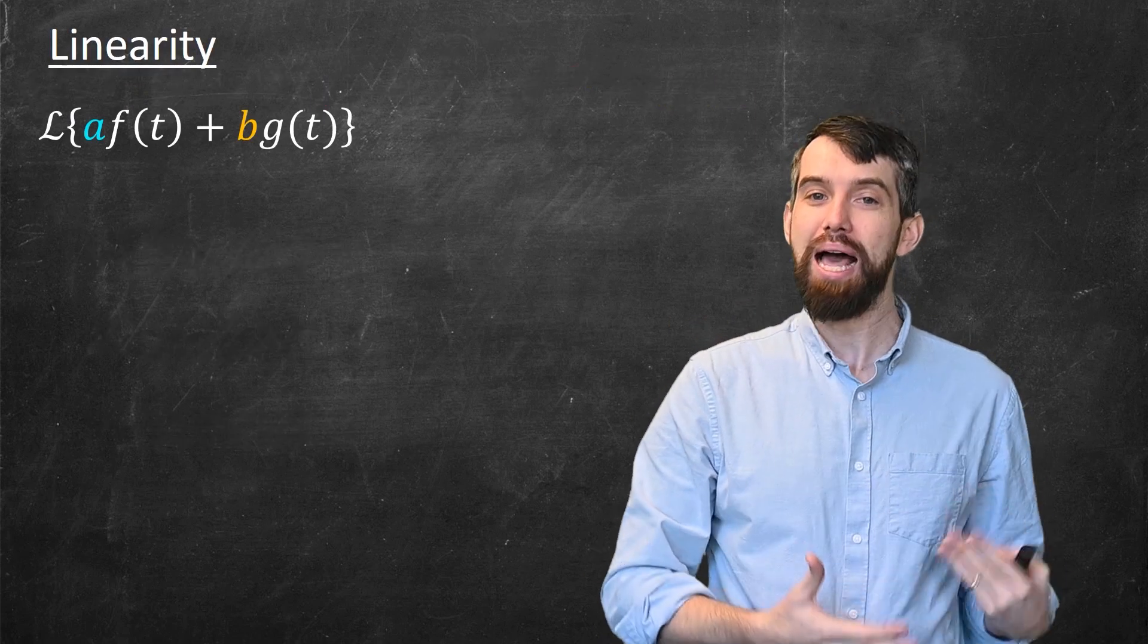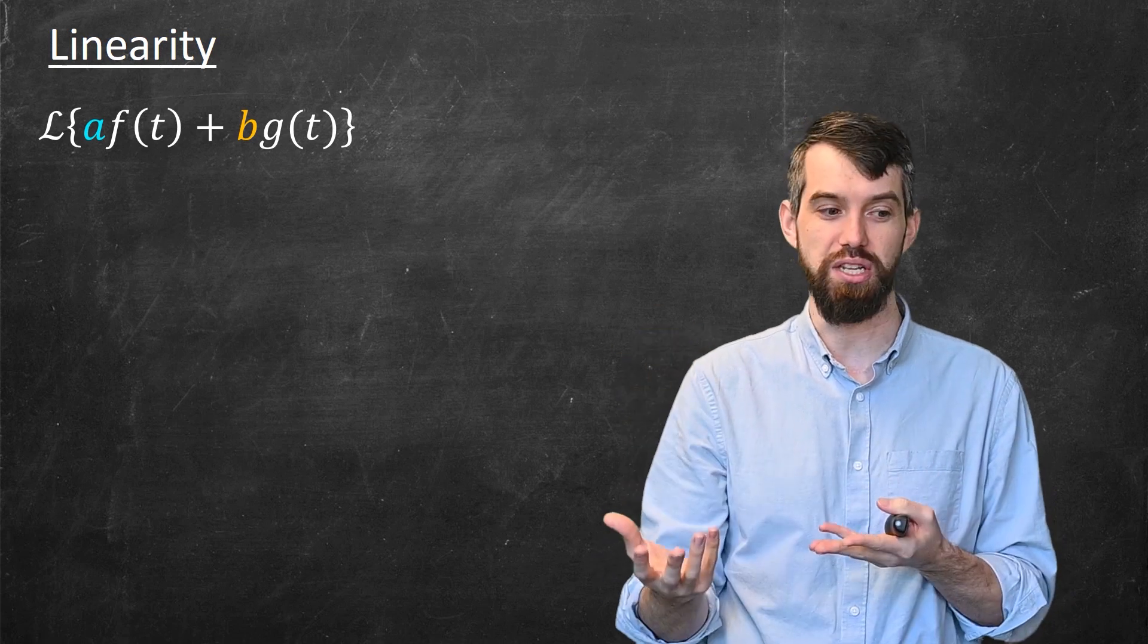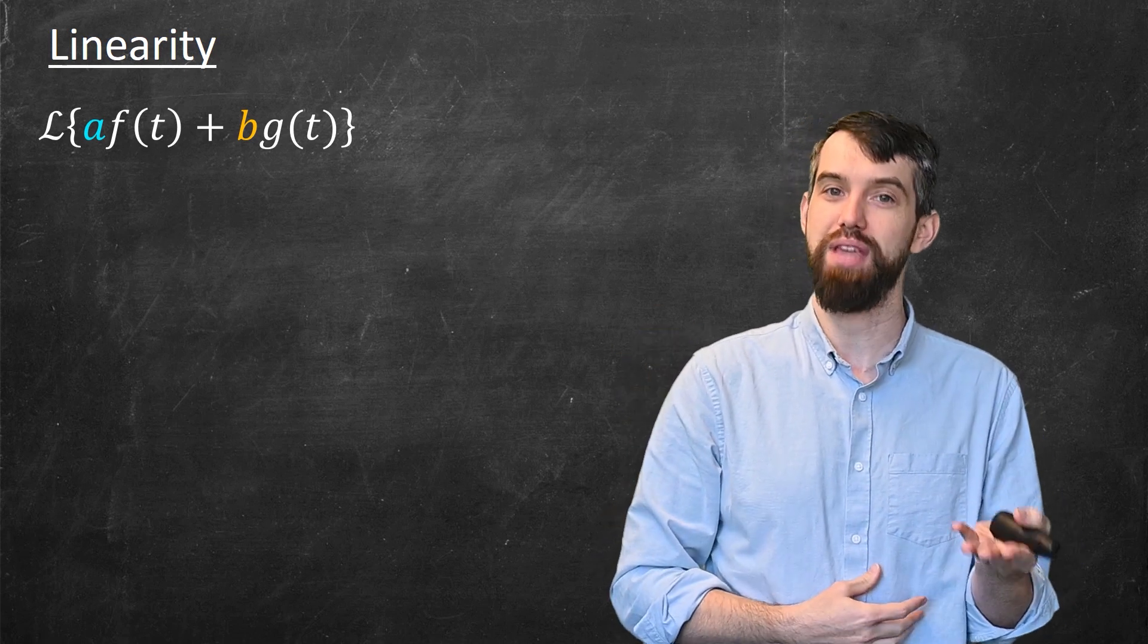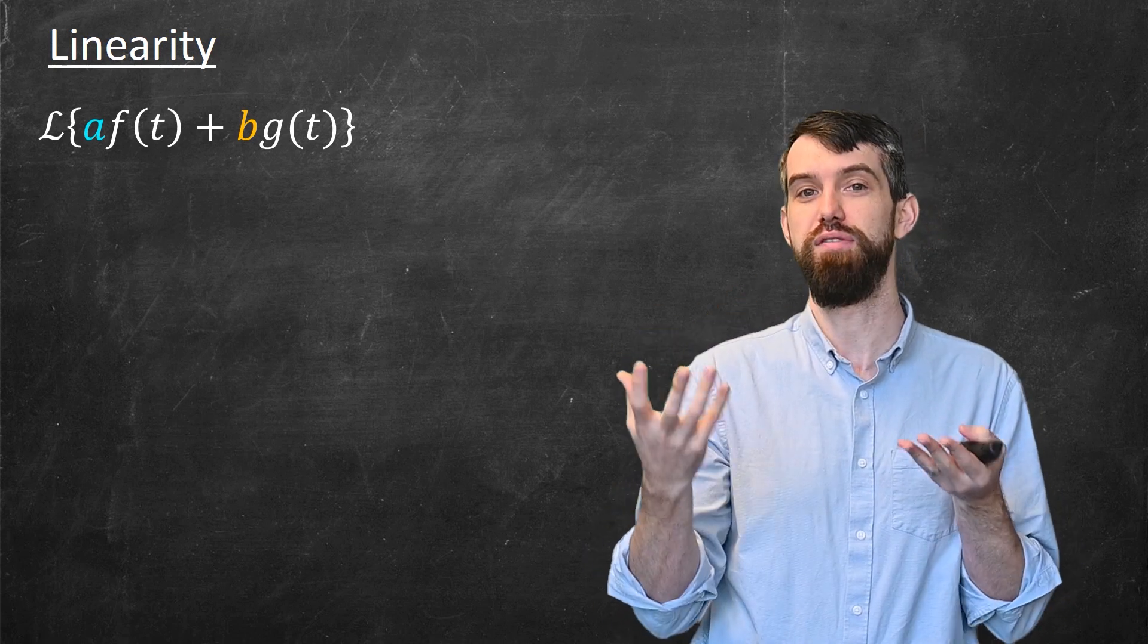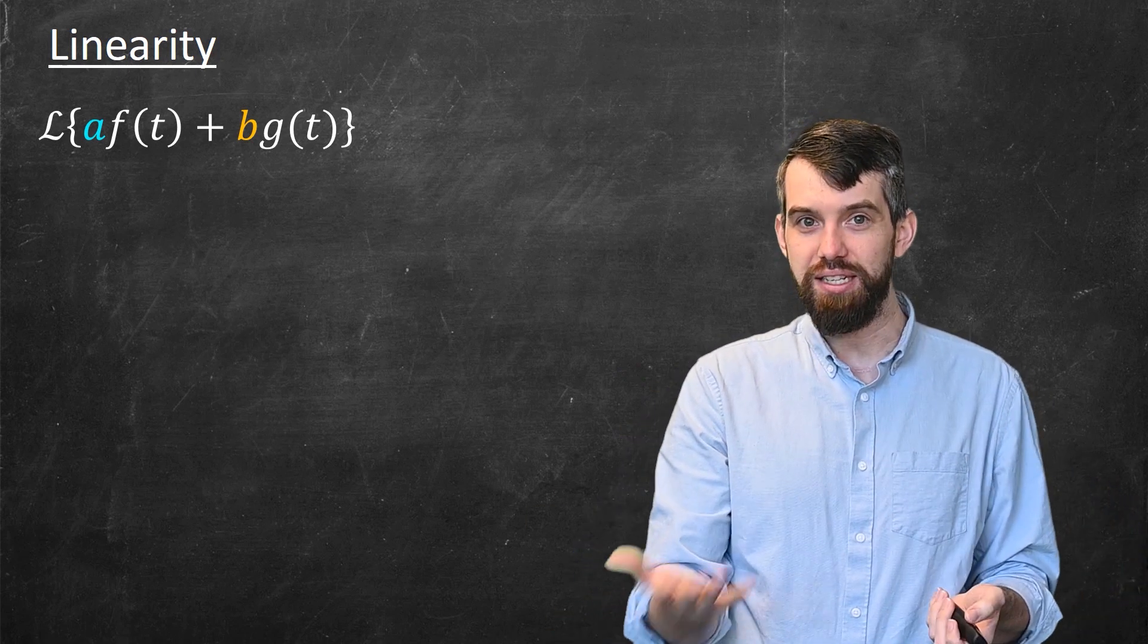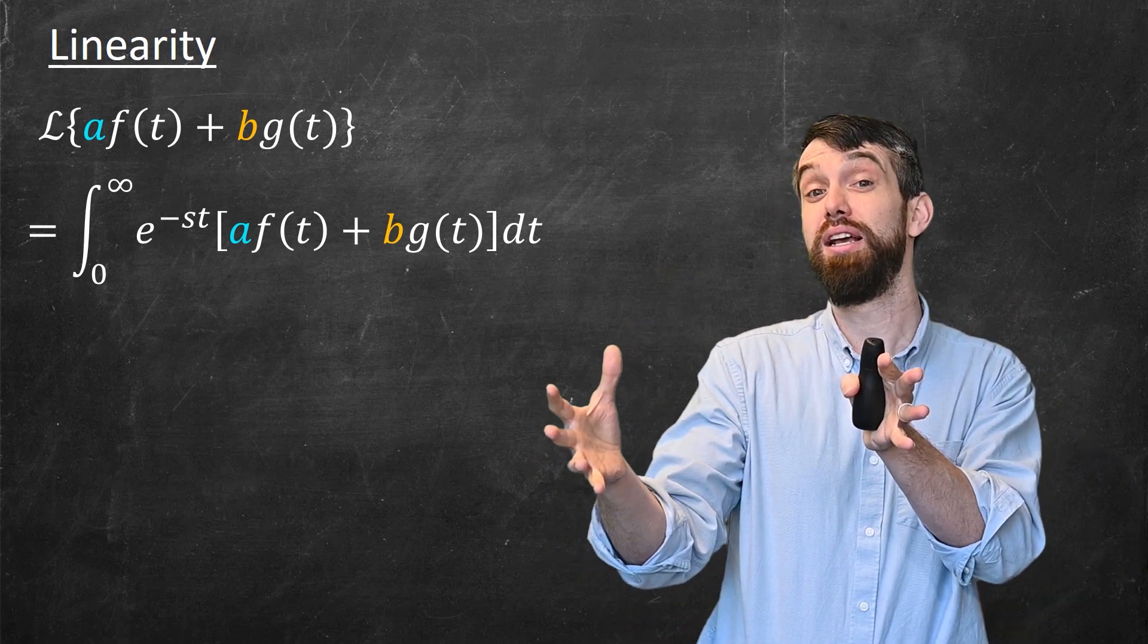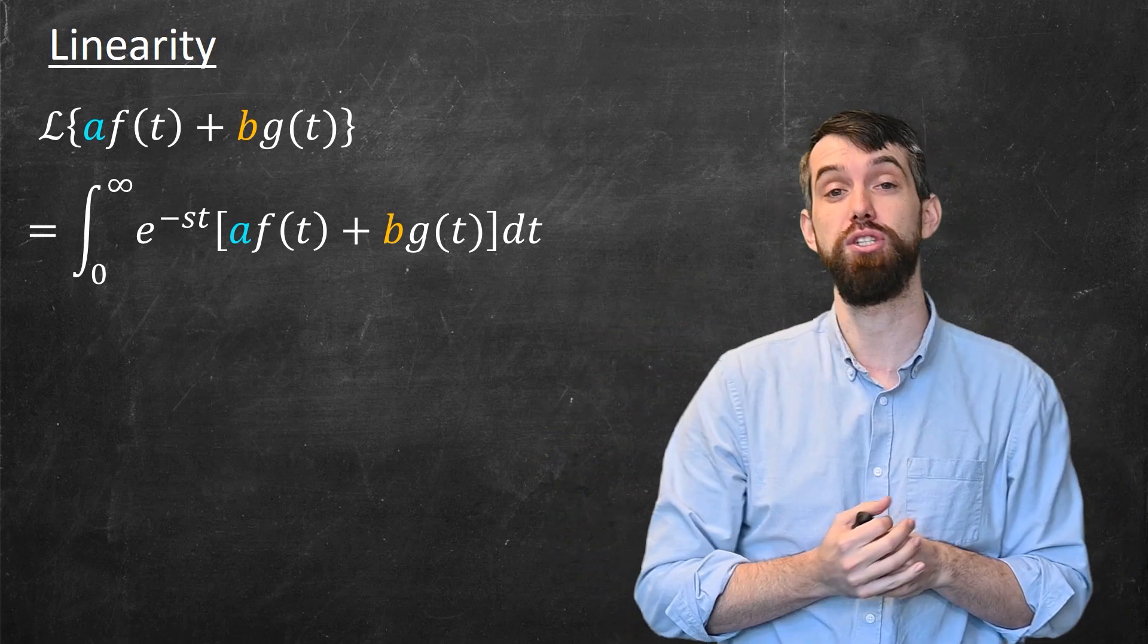For linearity, I'm going to consider the Laplace transform of some linear combination of two functions f and g. So I've got a coefficient a in front of f(t) and a coefficient b in front of g(t). The way this is defined is, I take the improper integral of e^(-st), and I plug in that linear combination directly.